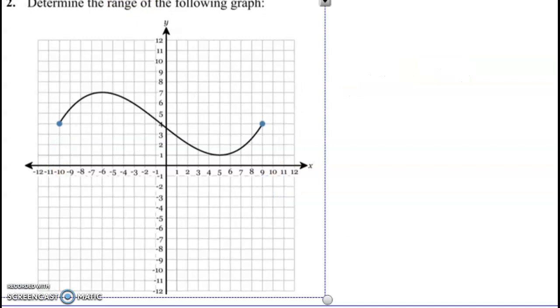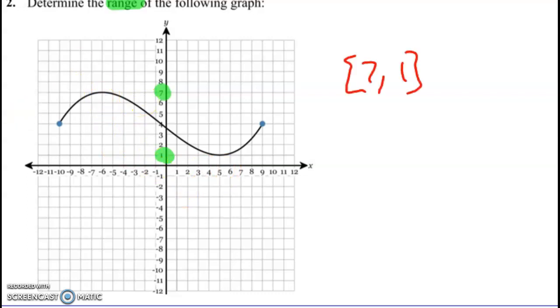On this one it says determine the range of the following graph. The range is going to be from the lowest point, which is one, to the highest point, which is seven. You don't have to pay attention to the end dots. We know that the lowest point includes the one and the highest includes the seven, so we're just going to write from the lowest to the highest: one to seven in brackets.